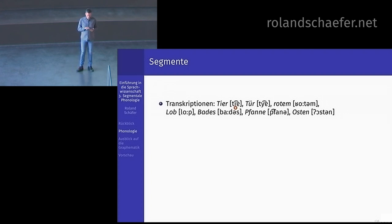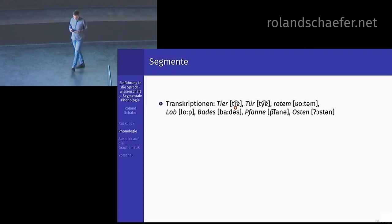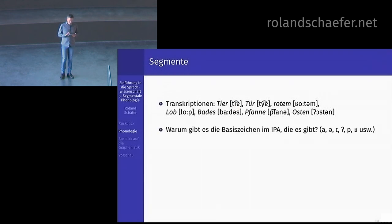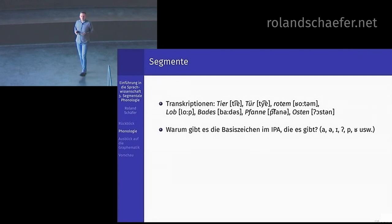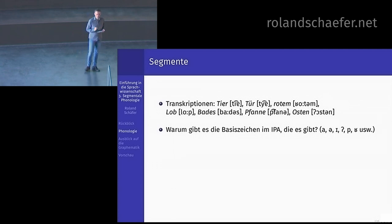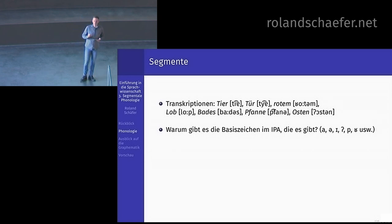Tier, Tür, Rotem, Lob, Bades, Pfanne, Osten — das war nahezu Standard. Warum gibt es eigentlich diese Basiszeichen im IPA-Alphabet? Warum gibt es genau die und nicht andere? Warum gibt es nicht welche, die noch elementarer sind und nochmal unterteilen? Das ist wie in der Physik mit den Elementarteilchen. Aber wenn wir ein Plosiv unterteilen würden — in Verschlussphase und Verschlusslösung — hätten wir Sachen unterteilt, die artikulatorisch untrennbar sind, und die einzelnen Teile würden sich nicht autonom verhalten.